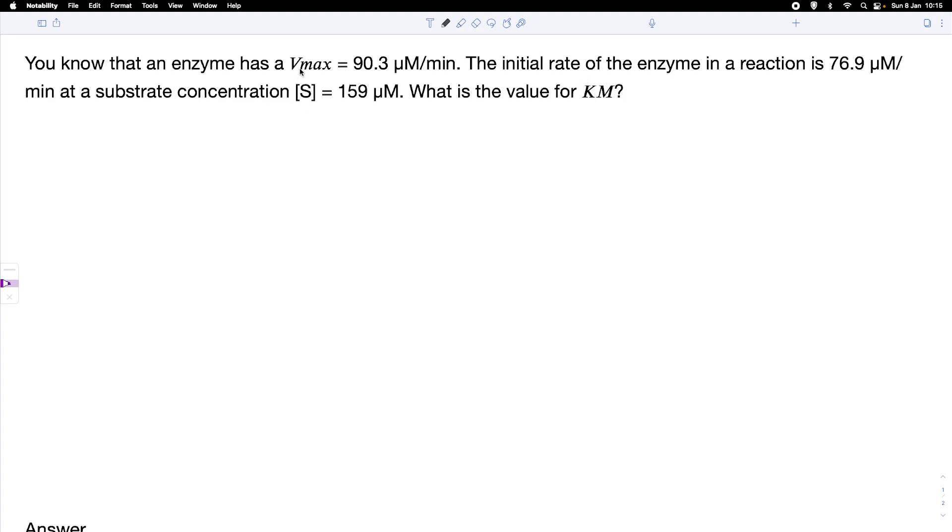And we know that our Vmax of this enzyme in this particular reaction is 90.3 micromolar per minute. We also know the initial rate of the enzyme, which is 76.9 micromolar per minute at a substrate concentration of 159. And we want to find Km.